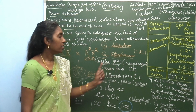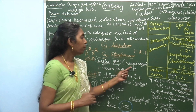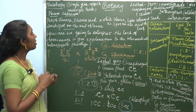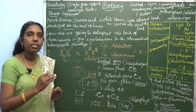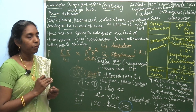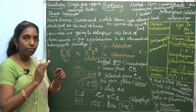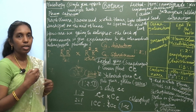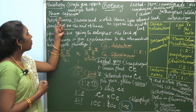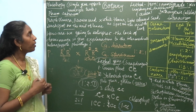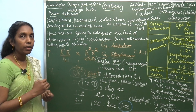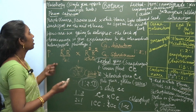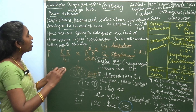So the example of lethal gene is snapdragon. Now another topic is pleiotropy. What is pleiotropy? A single gene affects multiple traits. Mendel noticed this when conducting experiments in garden pea, Pisum sativum.